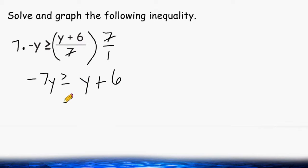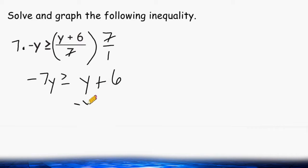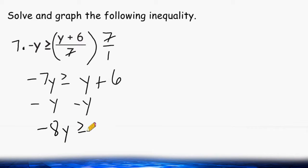Notice that we have the variable y on both sides of our inequality symbol, and we have to move that variable to one side. So we take this y and get rid of it on this side by doing the opposite. There is no negative in front of the y, meaning it is a positive y, and the inverse of that is negative y. So on this side we add negative 1y to negative 7y, which is a total of negative 8y. On the right-hand side, we still have the value of 6.